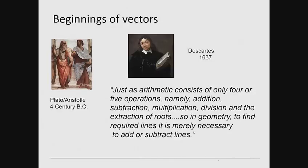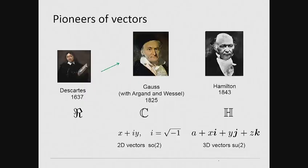It was in 1637, though, that Descartes produced a more abstract and modern view of a vector, stating: Just as arithmetic consists of only four or five operations, namely addition, subtraction, multiplication, division, and the extraction of roots, so in geometry, to find required lines, it is merely necessary to add or subtract lines.